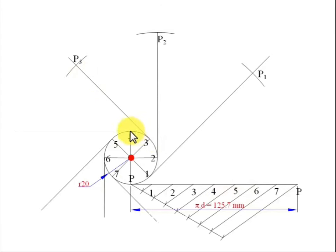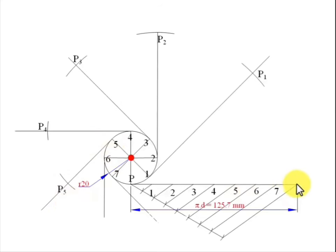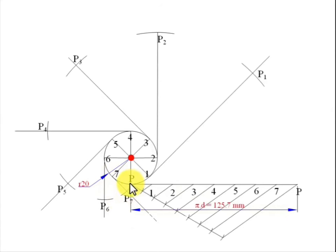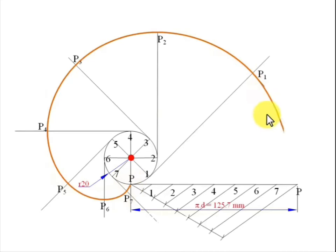From 5 to P with 5 as center, cut an arc to get P5. From 6 to P with 6 as center, cut an arc to get P6. Finally, from 7 to P with 7 as center, cut an arc to get P7, and the curve ends there. When you join all these points in proper sequence you get the curve popularly known as an involute.